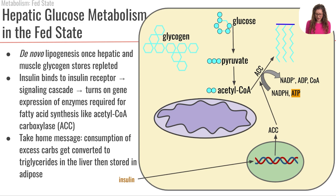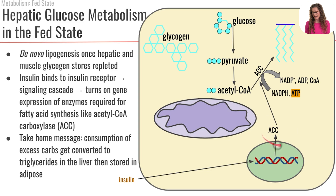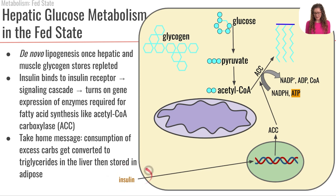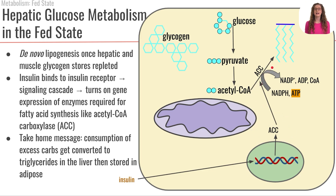Insulin, which was previously stimulating glycogen synthesis through glycogenesis, now that glycogen stores are repleted, is going to stimulate the expression of enzymes involved in de novo lipogenesis in the liver. The green circle shown here represents the nucleus, where insulin initiates a signaling pathway that increases gene expression of enzymes such as acetyl-CoA carboxylase, abbreviated as ACC.